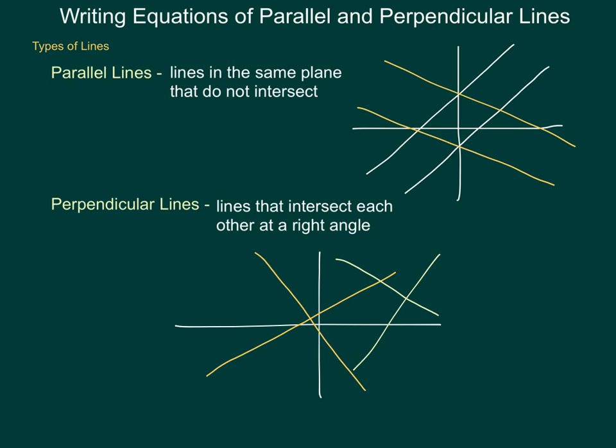For parallel lines, the slope of the first line has to equal the slope of the second line. However, for perpendicular lines, the slope of the first line would equal the opposite and what's called the reciprocal of the second. Parallel lines, if the first one is 5, the second one would be 5. Perpendicular lines, if the first one is 5, then the second one would be a negative 1/5.